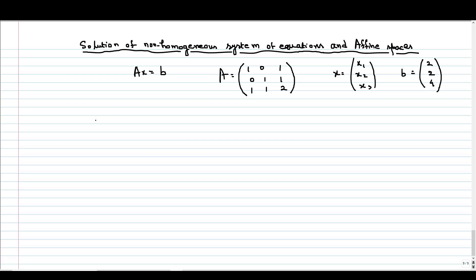Now, if we try to find the null space of A, we will do the row reduction, row operations on A to find the reduced row echelon form of the matrix A. So we start with the given matrix 1, 0, 1, 0, 1, 1 and 1, 1, 2.